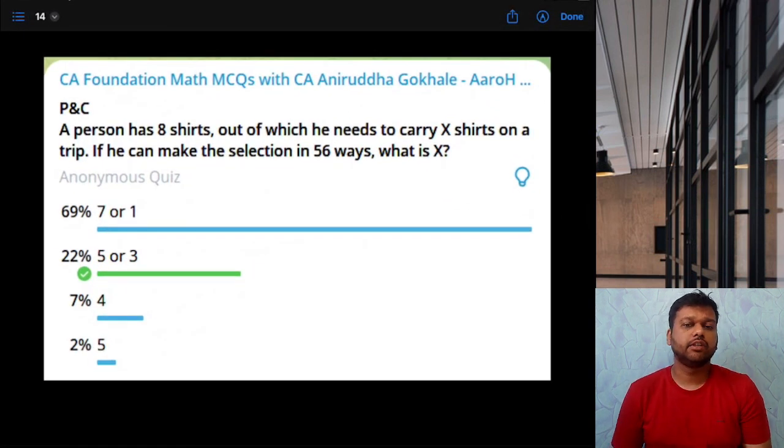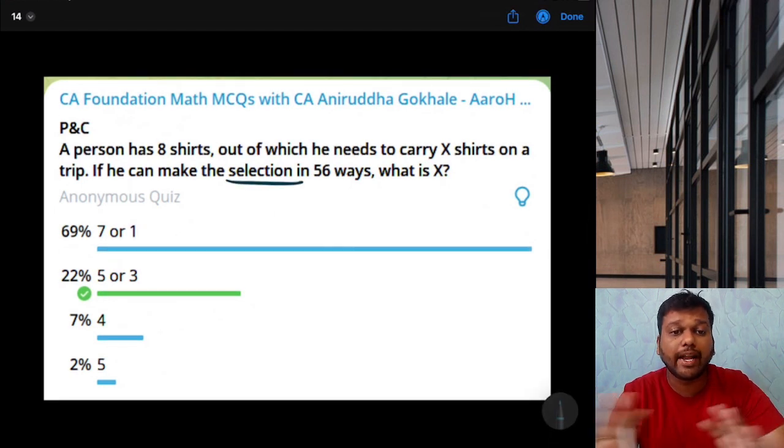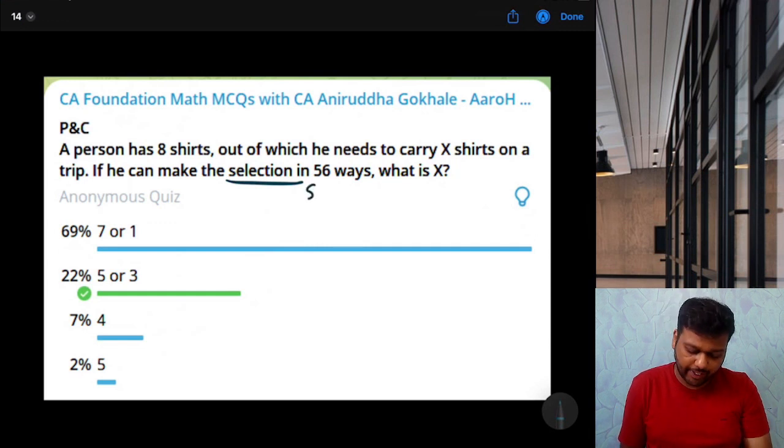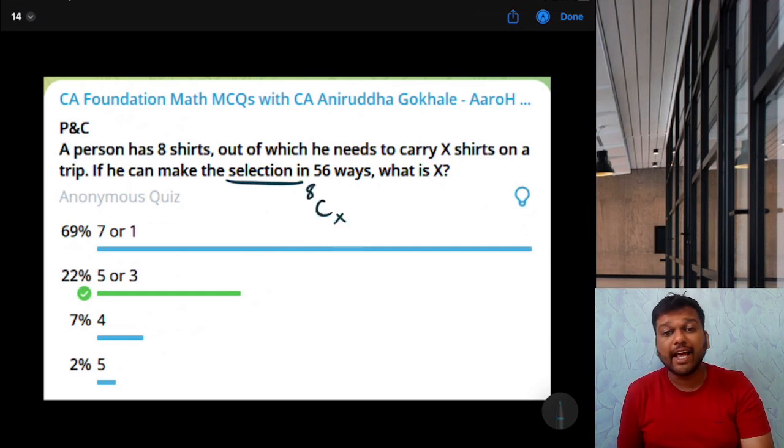Next. A person has 8 shirts out of which he needs to carry X shirts on a trip. If he can make the selection in 56 ways, what is X? Selection. He does not need to arrange the shirts. He just needs to select the shirts. So that means out of 8 shirts, he needs to select X shirts. And we know that this 8CX is 56.